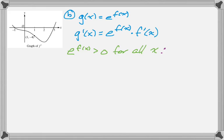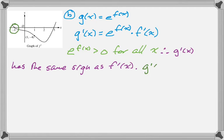So that means that the sign of g'(x) is really just determined by the sign of f'(x). Right? Because it's the product of e to the f(x) and f'(x). So we look at f'(x), and we see the only place that it changes from positive to negative is at x equals negative 1.